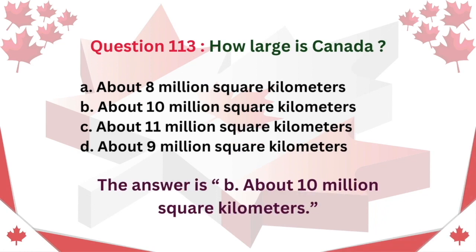Question 113: How large is Canada? A. About 8 million square kilometers. B. About 10 million square kilometers. C. About 11 million square kilometers. D. About 9 million square kilometers. The answer is B: About 10 million square kilometers.